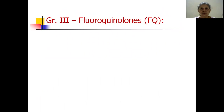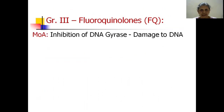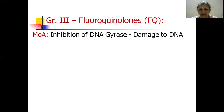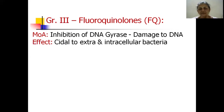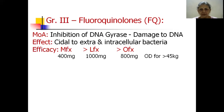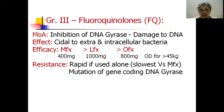Coming to fluoroquinolones, the Group 3 second-line anti-tubercular agents: the mechanism of action is inhibition of DNA gyrase. This enzyme is important for preventing DNA damage during replication or transcription — when DNA strands are opened. If DNA gyrase is inhibited, DNA gets damaged due to overcoiling. Hence the effect is bactericidal and it works on both extracellular and intracellular bacteria. Among the fluoroquinolones, moxifloxacin is the most effective, followed by levofloxacin, then ofloxacin. Resistance is rapid if used alone and is slowest to develop against moxifloxacin.